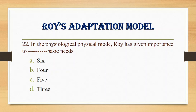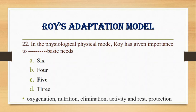Number 22. In the physiological/physical mode, Roy has given importance to how many basic needs? A. 6, B. 4, C. 5, D. 3. Answer: 5. Roy gave importance to 5 basic needs: oxygenation, nutrition, elimination, rest and activity, and protection.